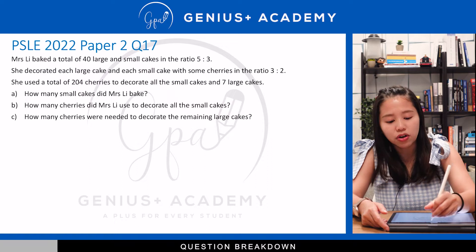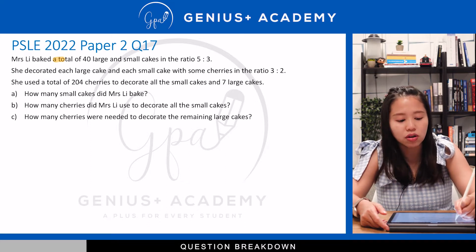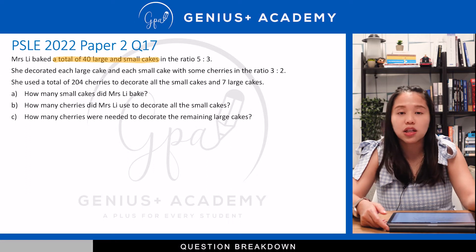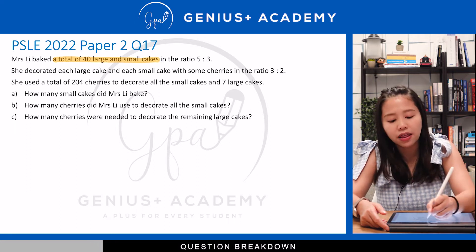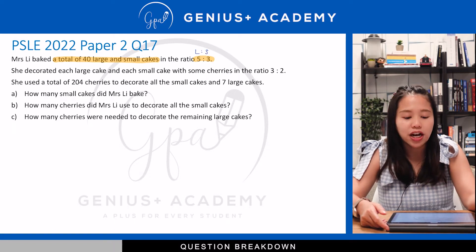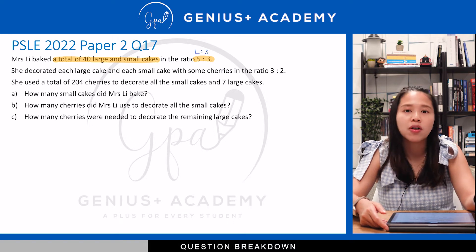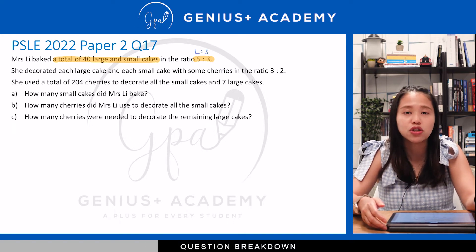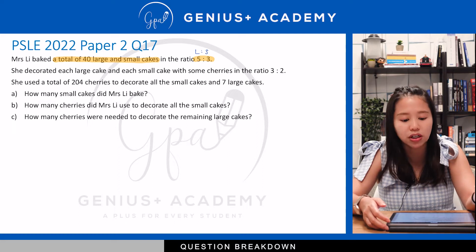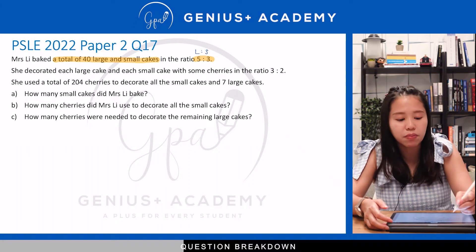We are going to look at the question in detail. After reading the first time, you should be able to see some characteristics of this question. The first sentence gives us the total number of cakes — the small and large cakes give a total of 40, and the ratio of large to small cakes is 5 to 3. Next, she decorated each large cake and each small cake with cherries in the ratio of 3 to 2. To simplify: on each large cake the number of cherries is 3 units, and for the small cake, the number of cherries is 2 units. This part is very important.